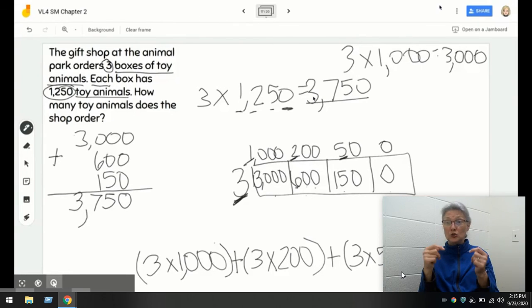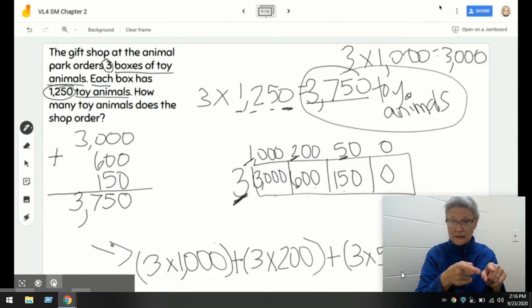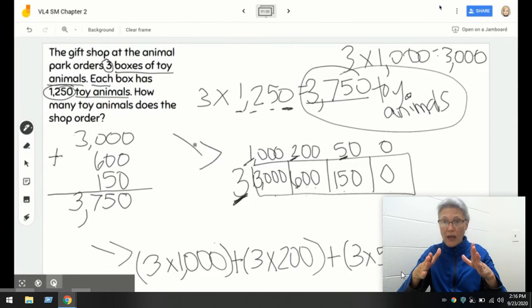How many toy animals does the shop order? The shop orders three thousand seven hundred fifty toy animals. Now, it's your turn to show what you know. Either using this down here, we've got expanded form and we've got our area model.